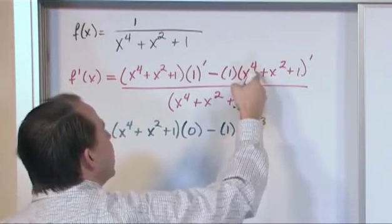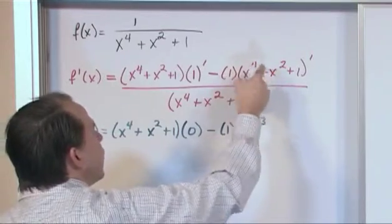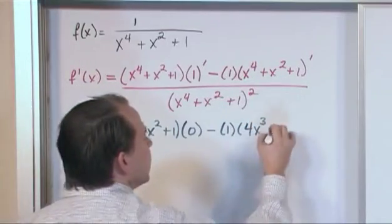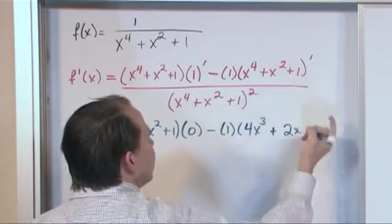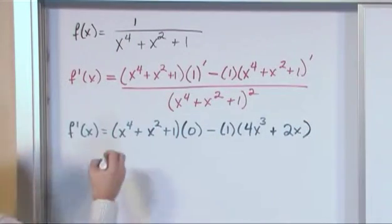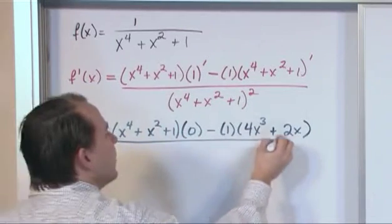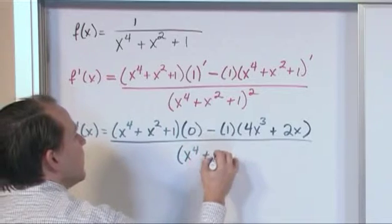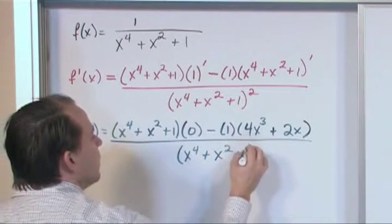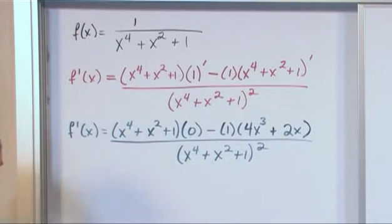This is going to be a derivative we need to take. What is the derivative of this term? 4x cubed. We take the exponent down, subtract 1 off the exponent and that's what we get. Plus this guy is going to be 2x. The derivative of this is just simply 0. So we leave it off. We've taken that derivative. We need to divide the whole thing by x to the fourth plus x squared plus 1 squared.